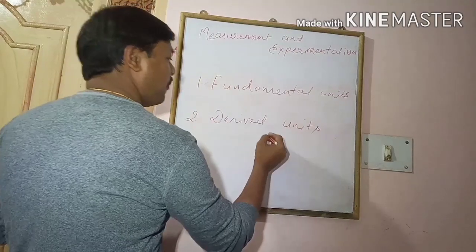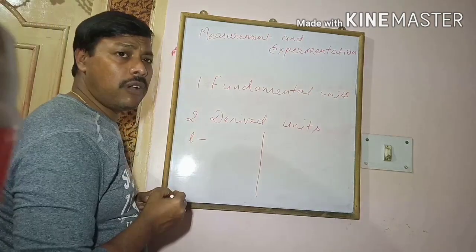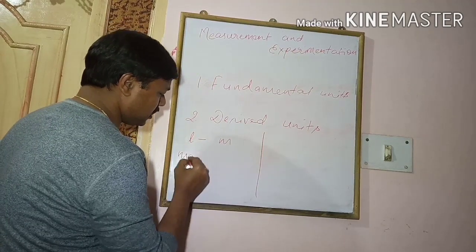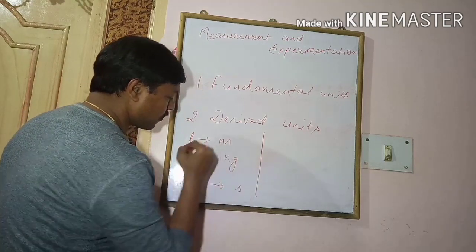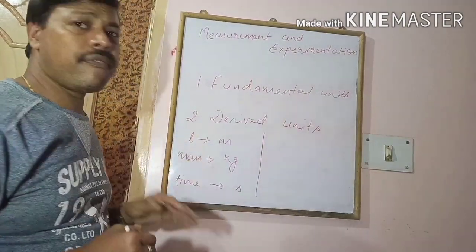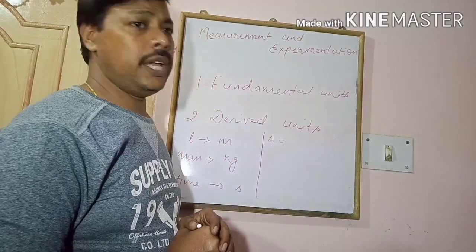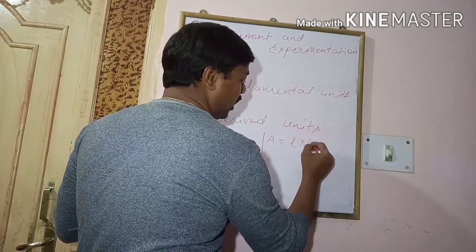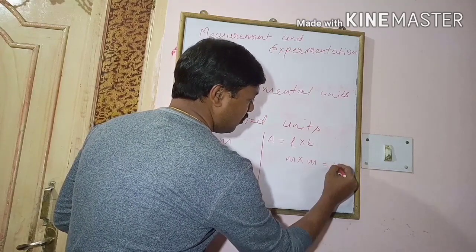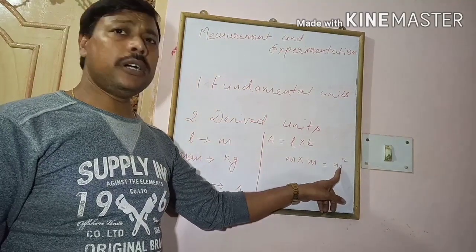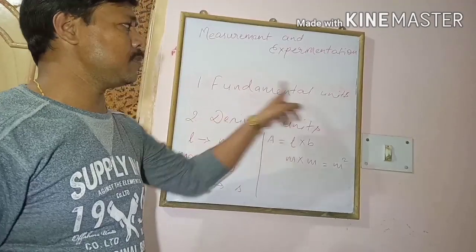With the help of examples, these are easy to understand. The unit of length is meter, the unit of mass is kilogram, and the unit of time is second — these are fundamental units. For the physical quantity area, area equals length into breadth, so the unit is meter into meter, which is square meter — an example of a derived unit expressed in terms of fundamental units.